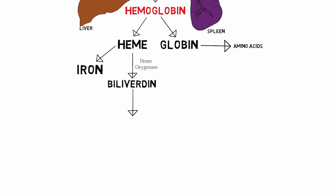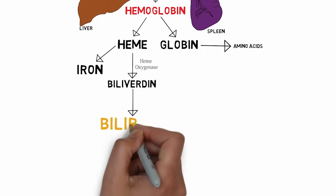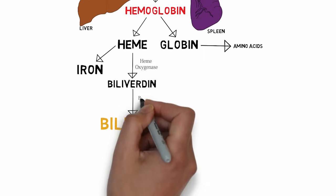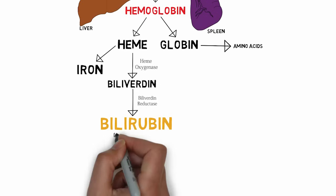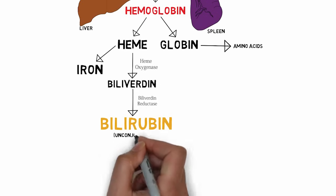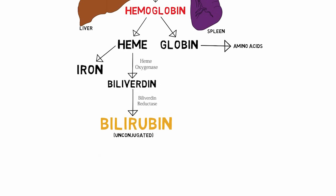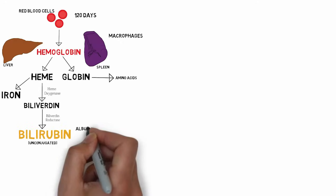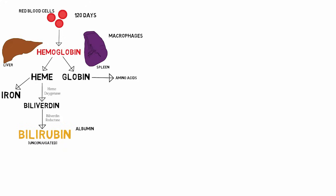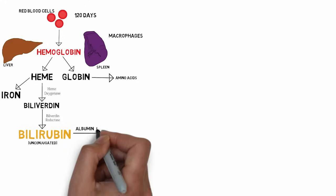In the next step, the biliverdin is converted into the yellow compound bilirubin, and this reaction is catalyzed by the enzyme biliverdin reductase. This bilirubin so formed is in the unconjugated form, which is not the water-soluble form. So it requires albumin for its transport to the liver.